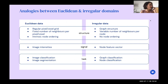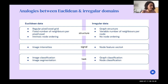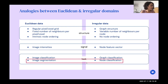In terms of analogies between Euclidean and irregular domains: image intensities in standard 2D or 3D images correspond to node feature vectors in the graph setting — in this case, the functional connectivity information of each node. The task of node classification is somewhat equivalent to image segmentation in the traditional Euclidean setting.